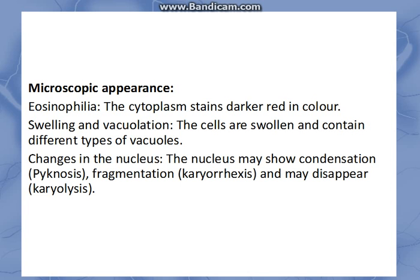Microscopic appearance: each cell shows eosinophilia — the area of necrosis shows eosinophilia, and the cytoplasm stains darker red in color. The cells are swollen and contain different types of vacuoles. Cellular shrinkage was a feature of apoptosis, whereas cellular swelling is a feature of necrosis.